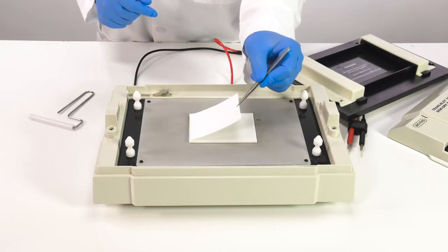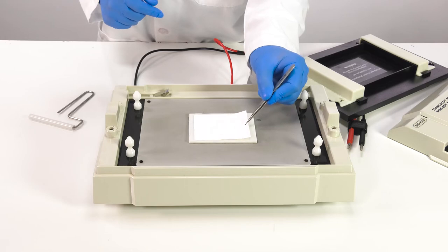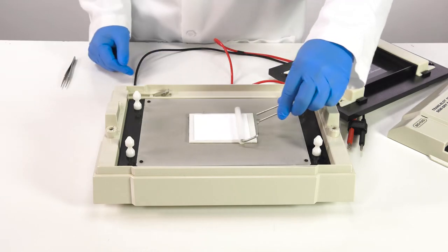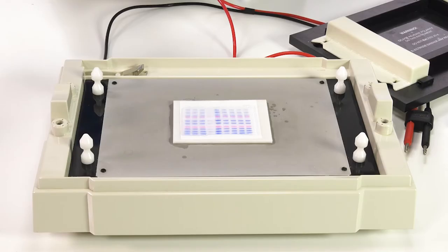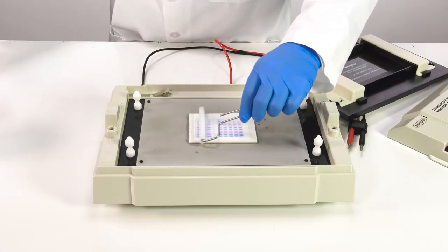Next, place the pre-wet membrane on top of the filter paper. Roll out any air bubbles. Carefully place the equilibrated gel on top. Make sure to minimize movement of the gel on the membrane to prevent ghost bands. Roll out any air bubbles.